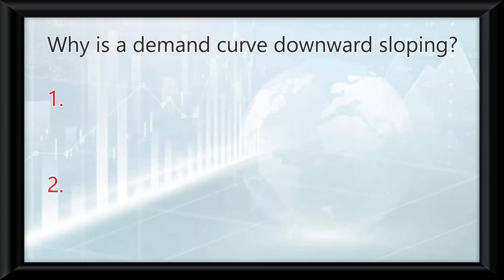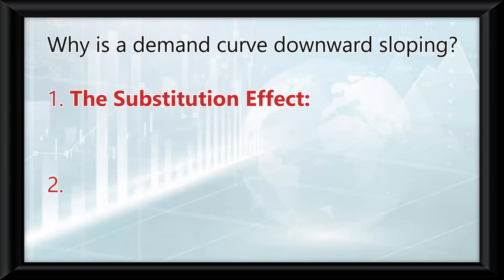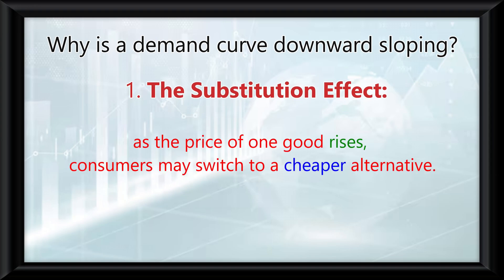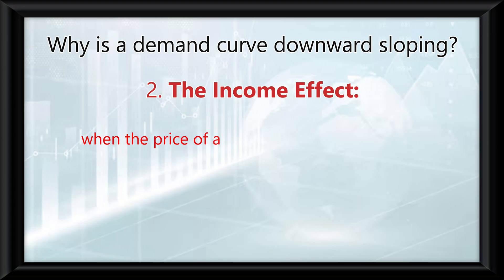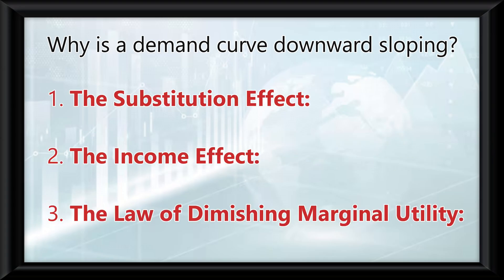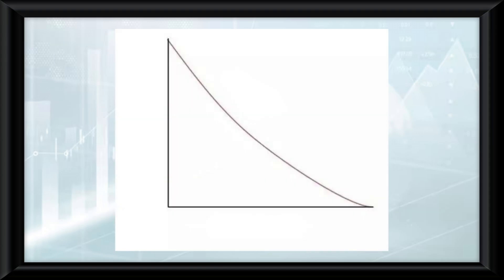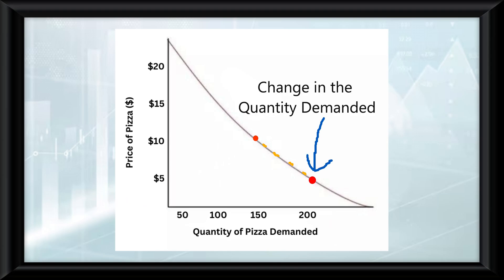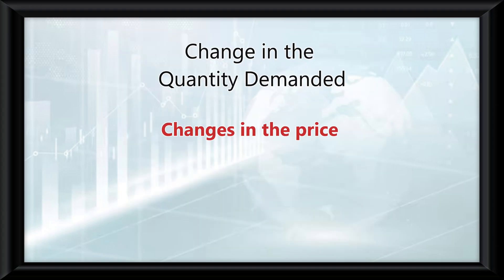The demand curve is downward sloping for two reasons: the substitution effect and the income effect. The substitution effect means that as the price of one good rises, consumers may switch to a cheaper alternative. The income effect means that when the price of a good falls, people feel like they have more income to spend and they buy more. As the price of pizza drops from $10 to $5, you'll see a movement along the demand curve, showing that consumers are buying more pizza at the lower price. This movement is called a change in quantity demanded, and it's caused by changes in the price of the good itself.